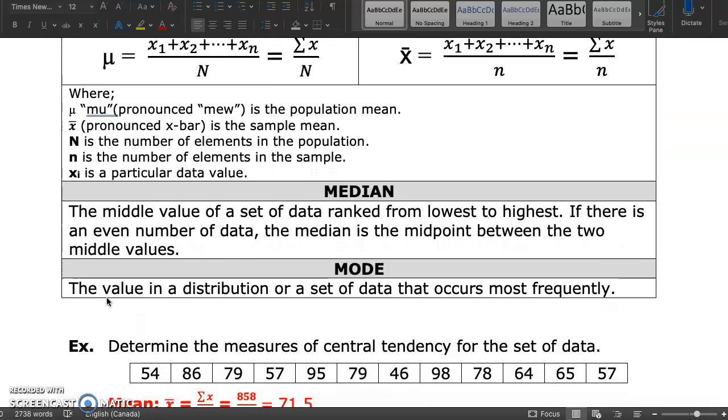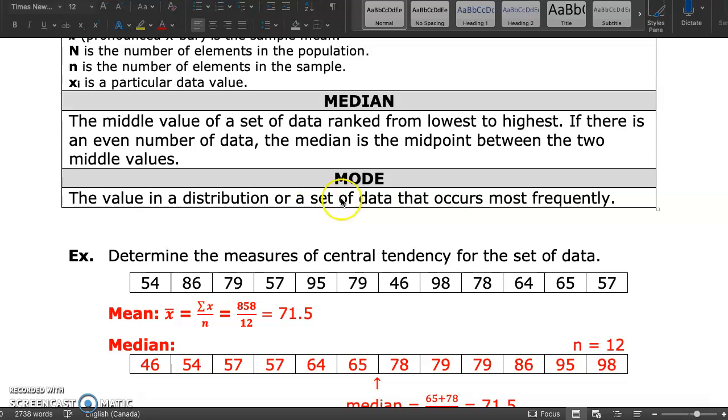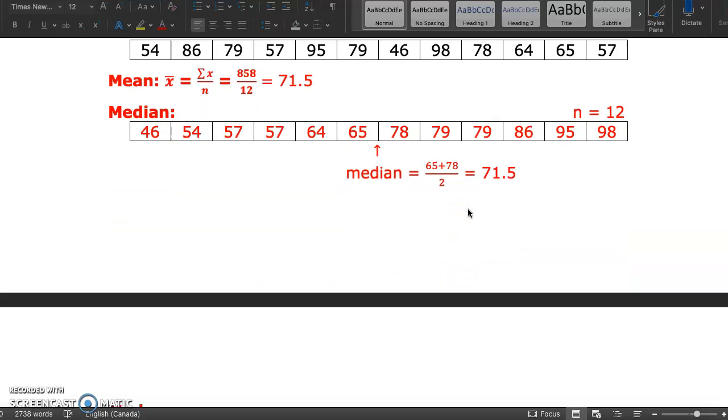The median is the middle value of a set of data ranked from lowest to highest. The mode is the most frequent data value in the set. There are examples that you can go through on your own.